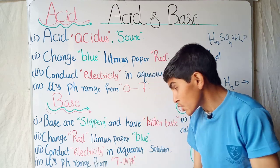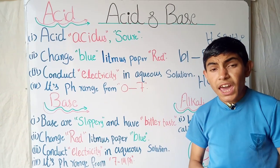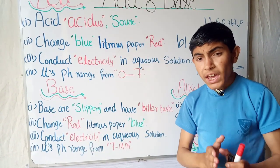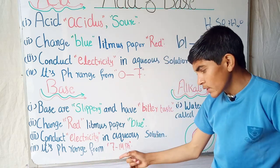They conduct electricity in aqueous solution, just like the acid. The strong bases are very corrosive and they cause burns on the skin. Its pH range is from 7 to 14.